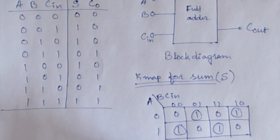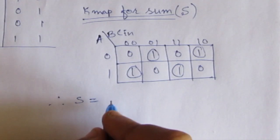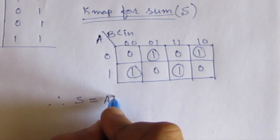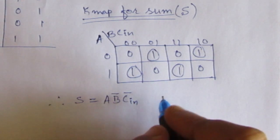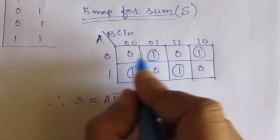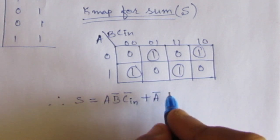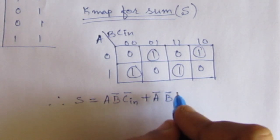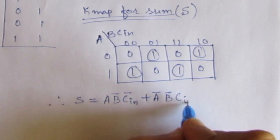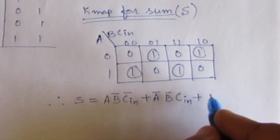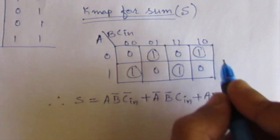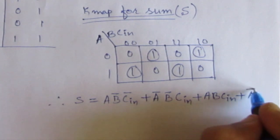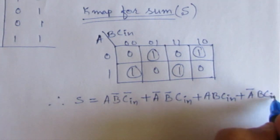Therefore, sum is equal to — let us consider this term: A·B̄·C̄. Then the next term, plus this one: Ā·B̄·C-in. Plus the third term: A·B·C-in. Plus the fourth term: Ā·B·C̄-in.